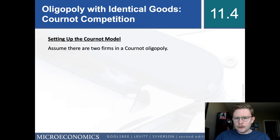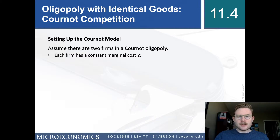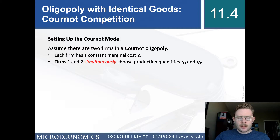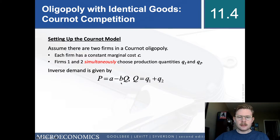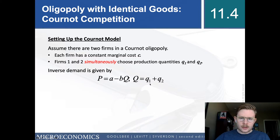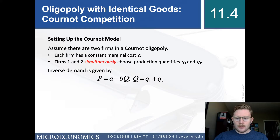Let's set it up. Assume there are two firms in the Cournot oligopoly. Each firm has the same marginal cost C. Both firms simultaneously choose their production quantities Q1 and Q2. The market inverse demand is given by P equals A minus B times capital Q, where capital Q equals firm one's quantity plus firm two's quantity — the total market production is made up of what each firm produces.